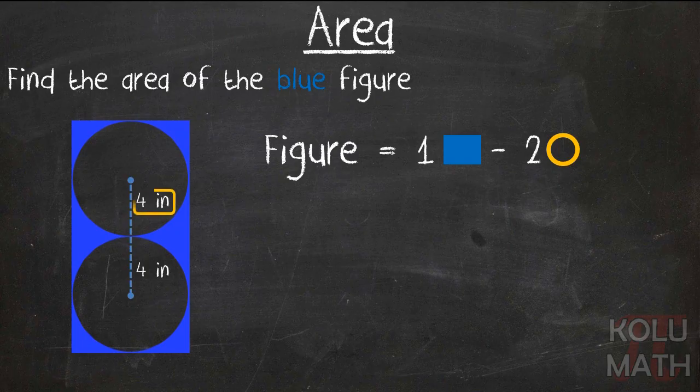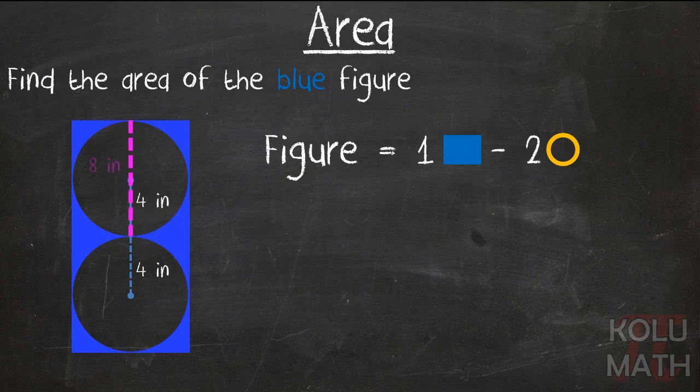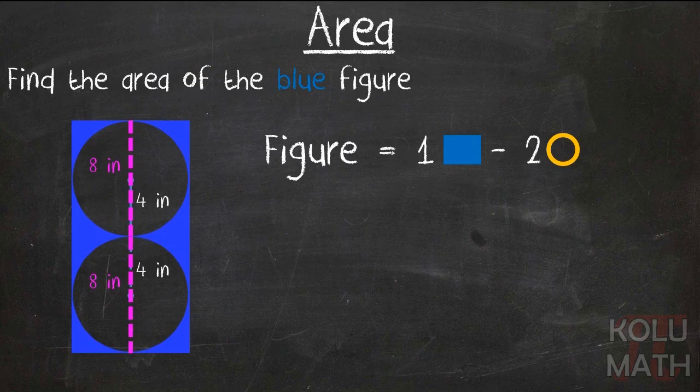They haven't given us a heck of a lot of info. All they told us was the radius. But the cool thing about circles is the radius actually tells you quite a bit, right? Because if the radius is four, well, then we know that the diameter is eight and same deal for the one below. Right. That's also going to have a diameter of eight because it has a radius of four.